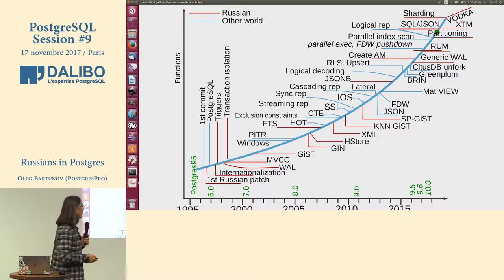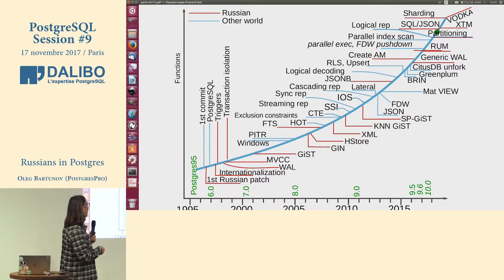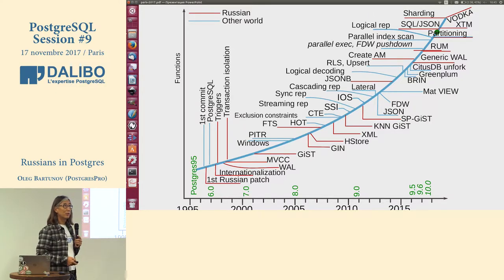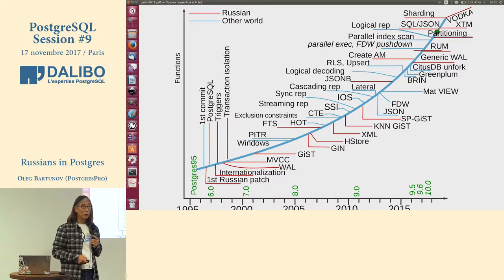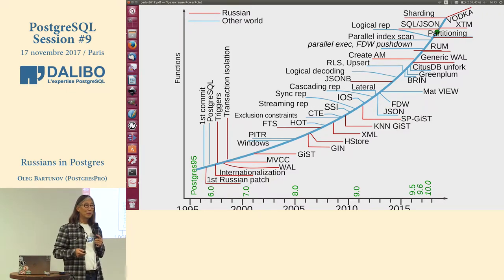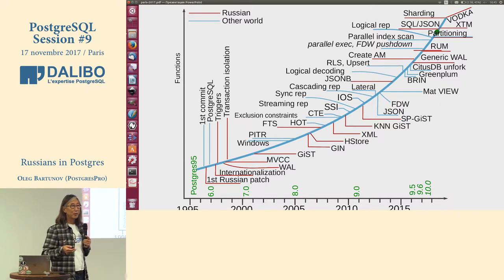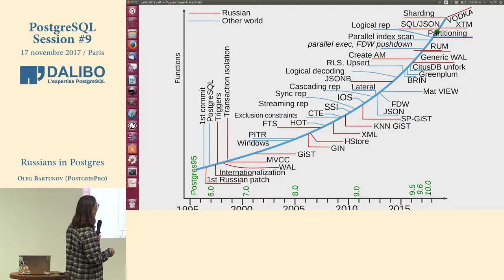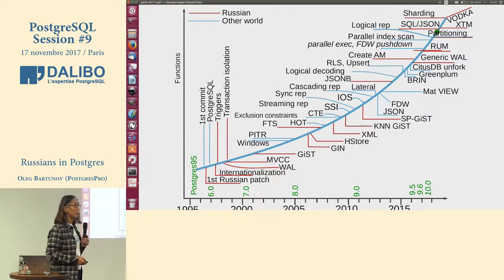My patch was about internationalization. Then we introduced WAL, write-ahead log, MVCC, triggers, transaction isolation. Then we started developing GiST — a very interesting project, because through this project we realized that extensibility of Postgres is the main feature, the main advantage of Postgres. We created GiN, hstore, and full-text search. The red line is Russian contribution.